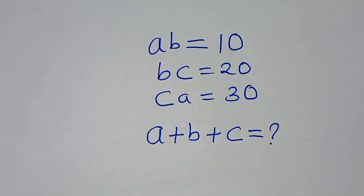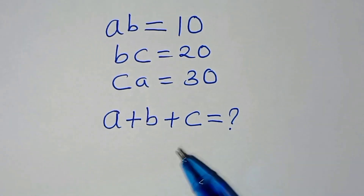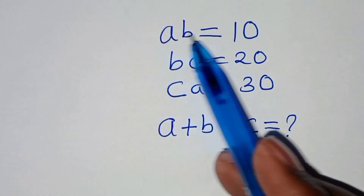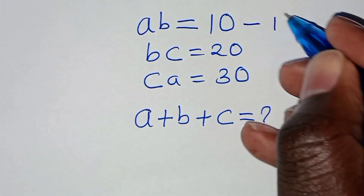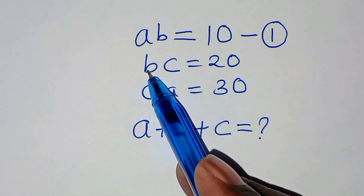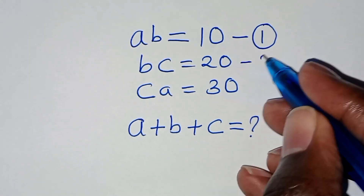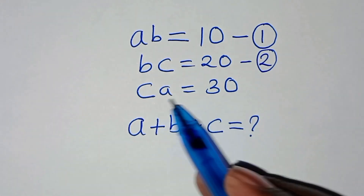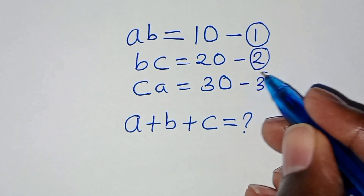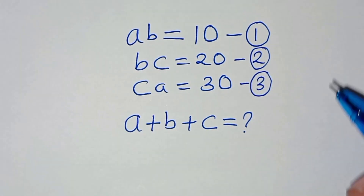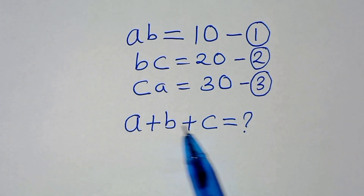Hello everyone, you are welcome to solve this nice algebra problem. We have a times b equal to 10 — let's call this equation 1. We have b times c equal to 20 — let's call this equation 2. And we have c times a equal to 30 — let's call this equation 3. The question is: what is a plus b plus c?